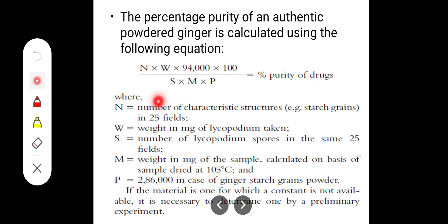Here is the formula. This is a very popular formula which we are going to use in the practical also. The percentage purity of an authentic powdered ginger is calculated using the following formula: N × W × 94,000 × 100 divided by S × M × P equals percentage purity of the drug.